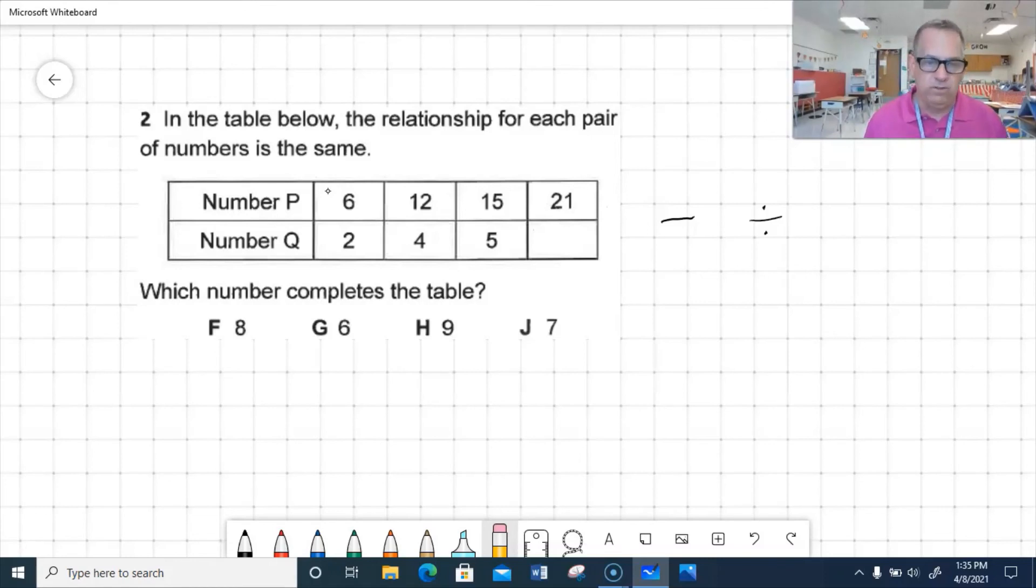So what can I divide 6 by to make it 2? That's right. 6 divided by 3 equals 2. So what is 12 divided by 3? That's right. 12 divided by 3 is 4. That's a true statement. What is 15 divided by 3? That's right. 15 divided by 3 is 5. And what is 21 divided by 3? Yes. 21 divided by 3 is 7. So we would pick answer choice J.